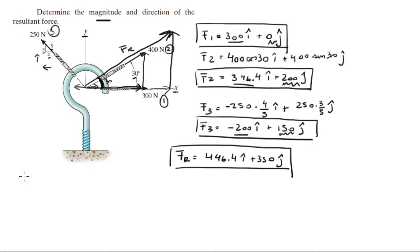So to calculate the magnitude of FR, you basically got to get the x component squared plus the y component squared and square root them, which is this and this. You plug them into here and you're going to get that the magnitude is 567.25.